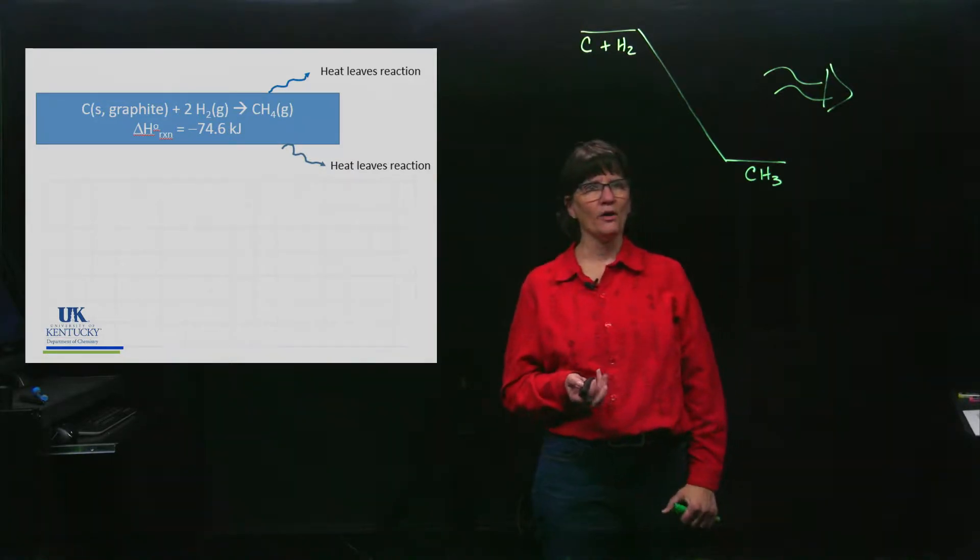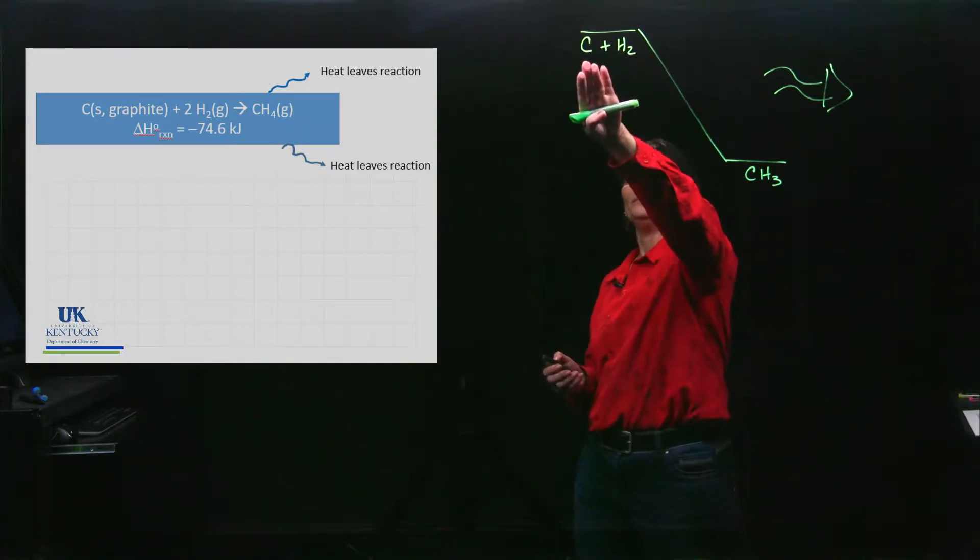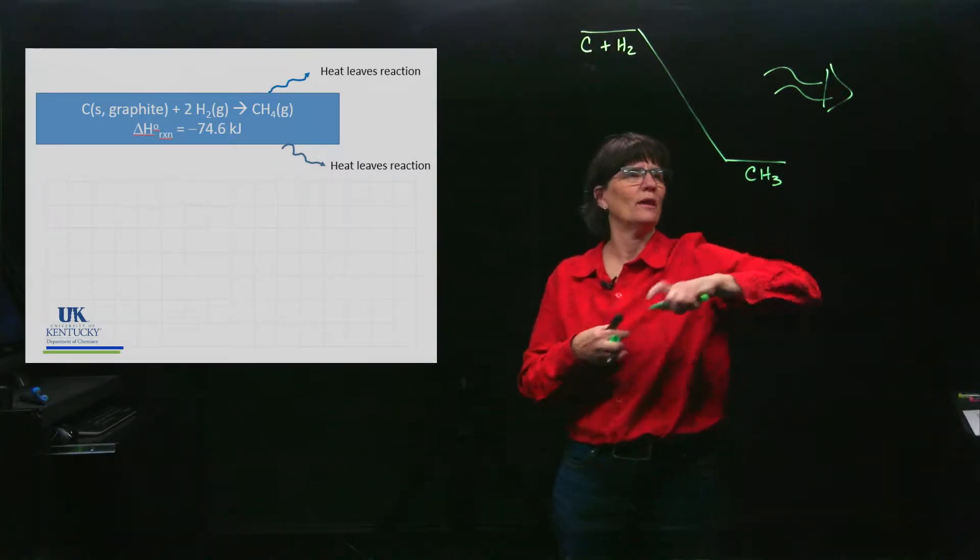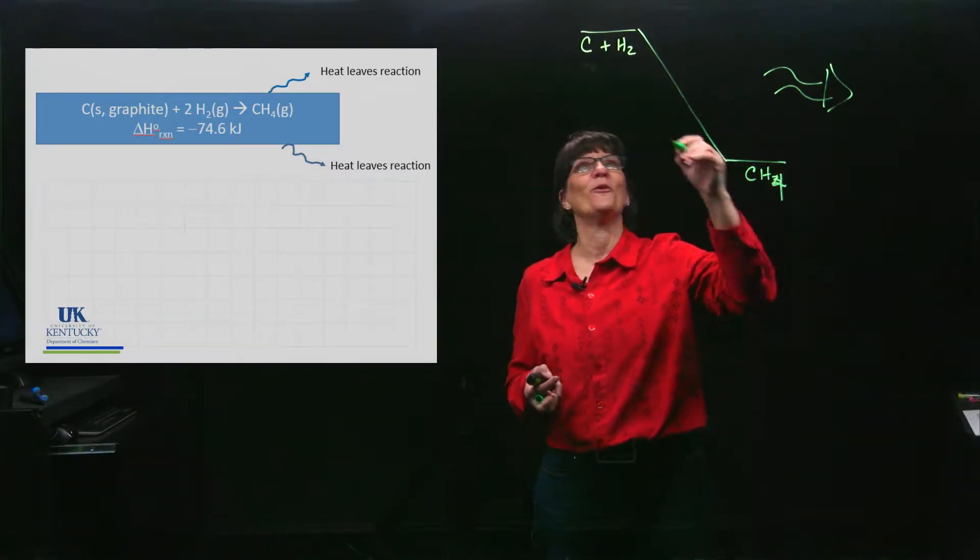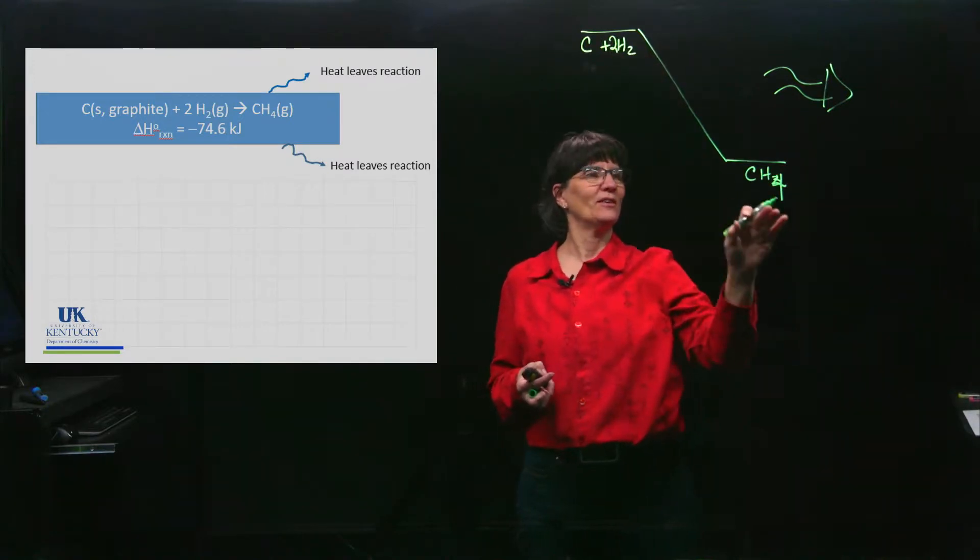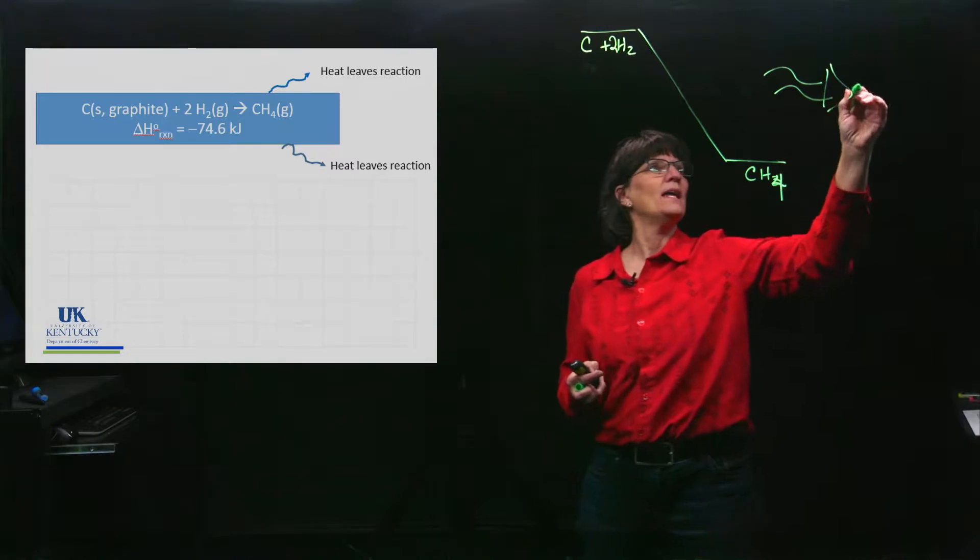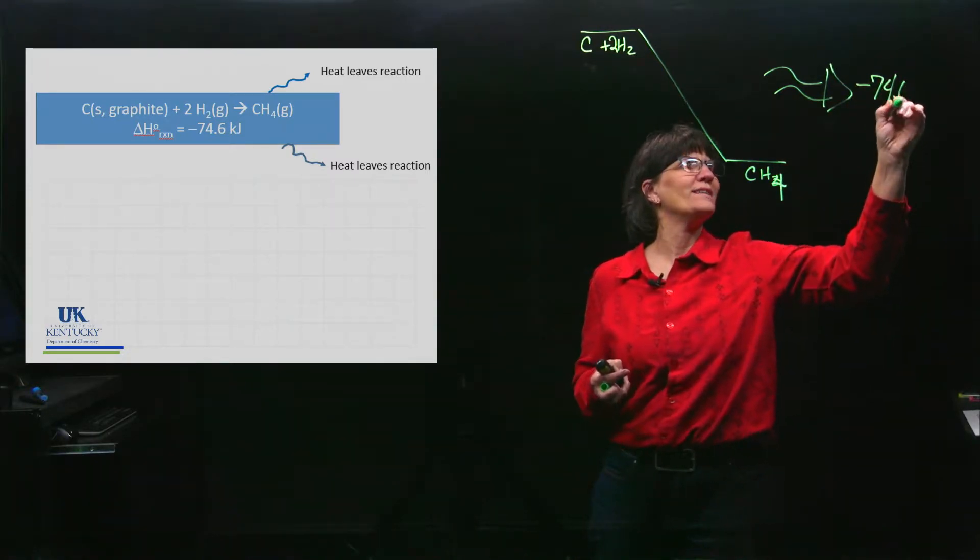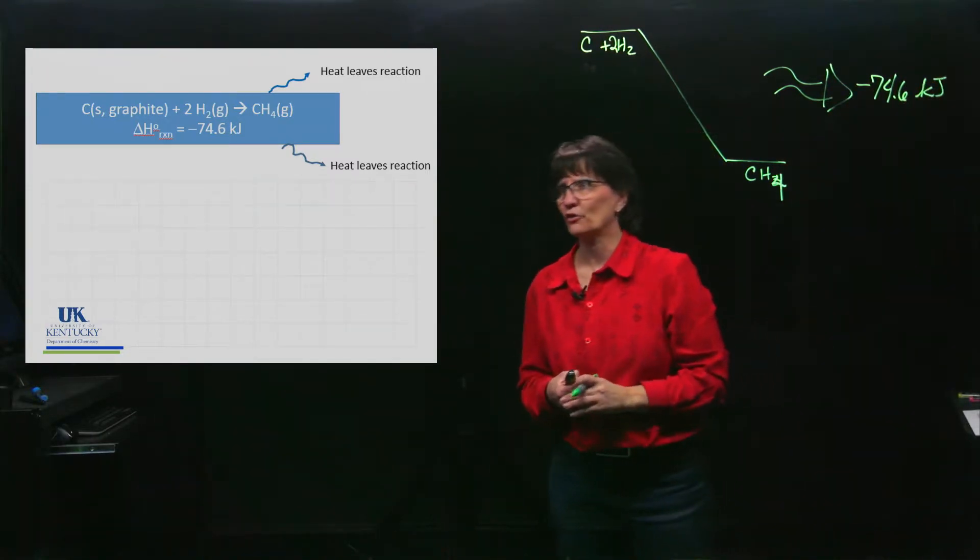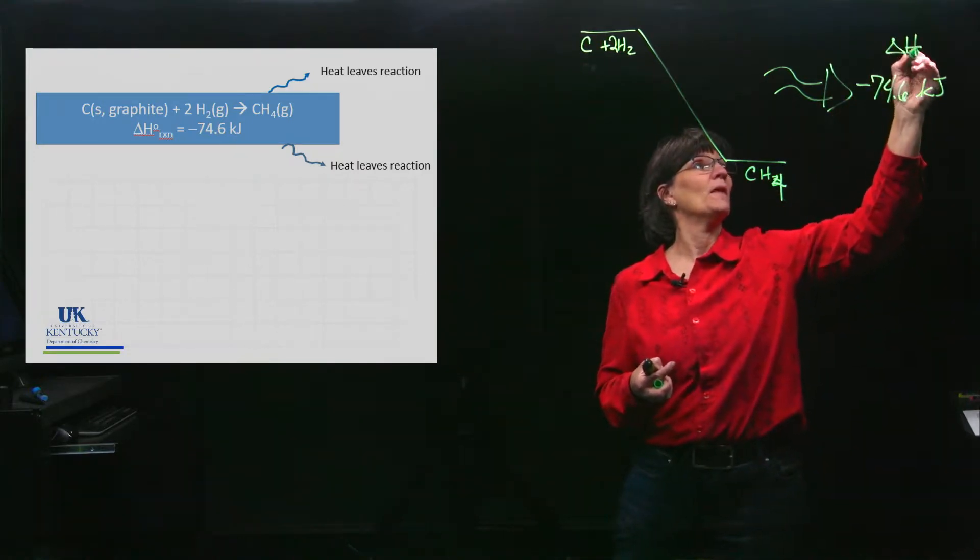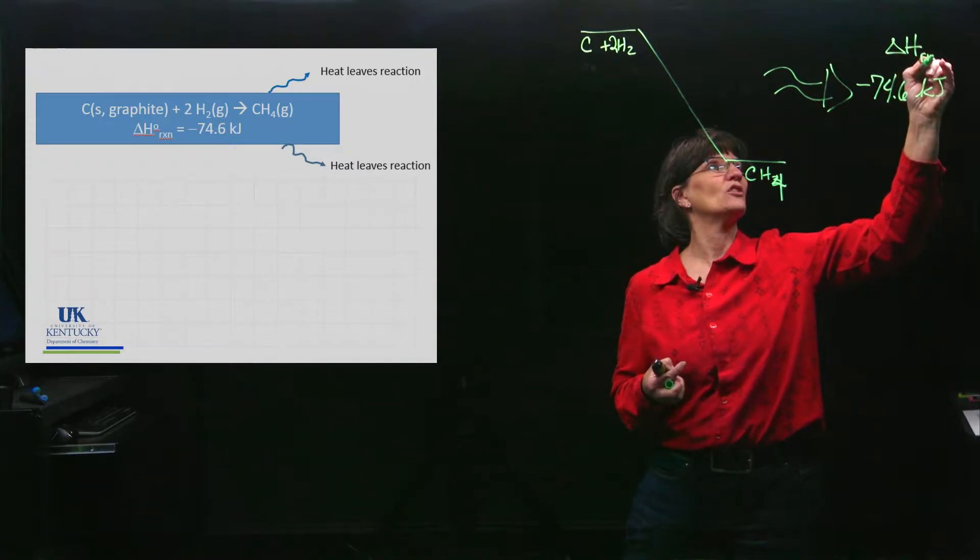I'm going to look closely at this reaction in the blue box. We've got carbon in the form of graphite reacting with two moles of hydrogen. It's telling me exactly how much heat is being released: negative 74.6 kilojoules is going out into the surroundings. That's the ΔH value, it is exothermic.